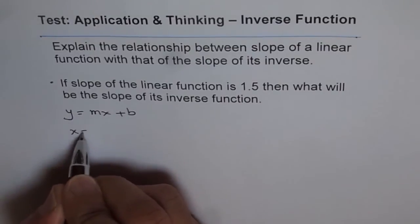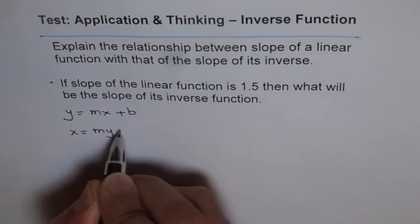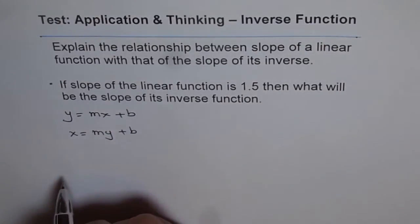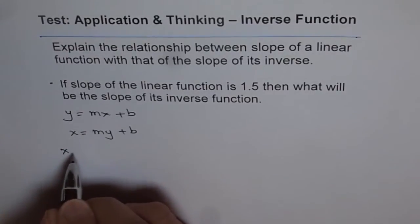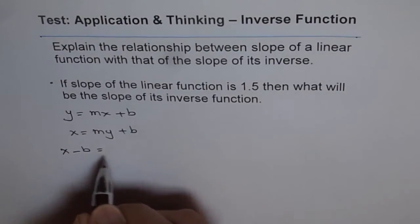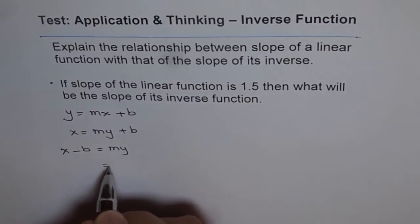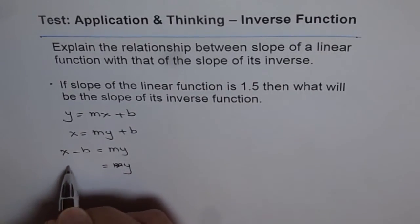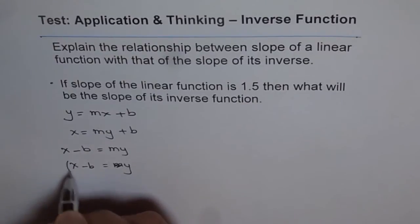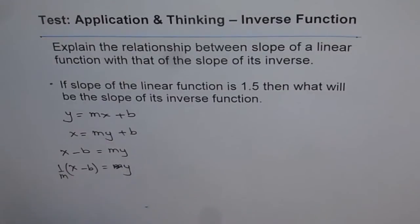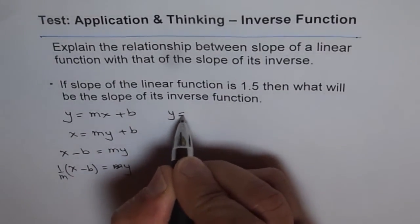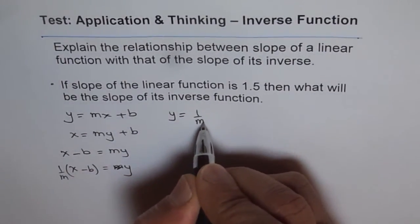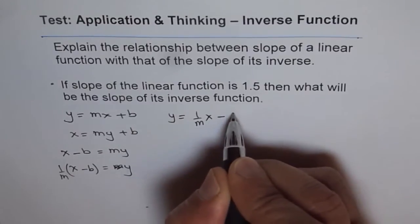So we can write x equals my plus b and then try to solve for y. So we get x minus b equals m times y, or we can say y equals x minus b times 1 over m. That gives us the equation y equals 1 over m x minus b over m.